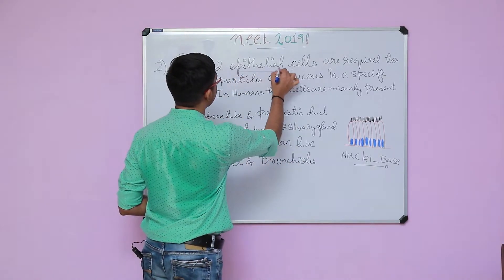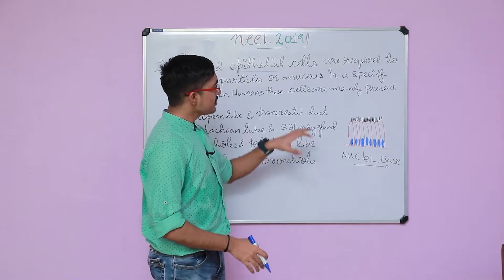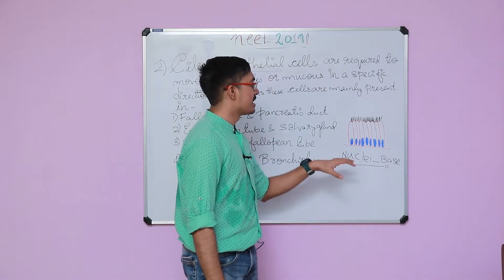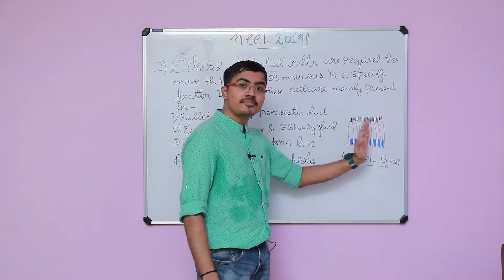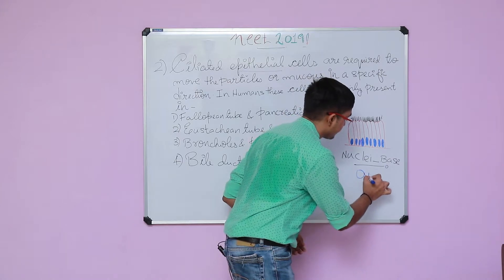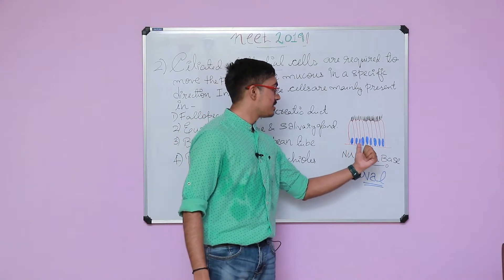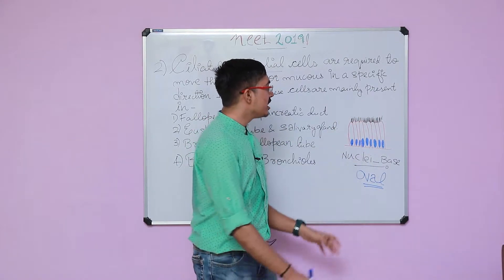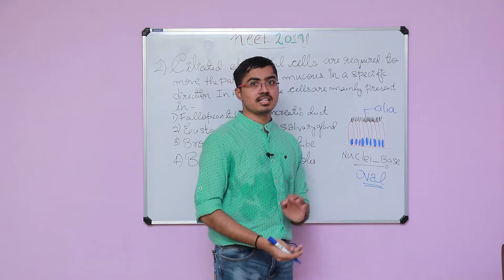They are talking about ciliated epithelial cells. I have made a small representation of these cells. Ciliated columnar epithelial cells are long, slender cells arranged one after another. The nucleus is oval in shape — that is one of the very important distinguishing features — and this oval-shaped nucleus is located towards the base, aligned along the vertical axis. On top of that, we have the cilia. That is how a typical ciliated columnar epithelial cell looks.